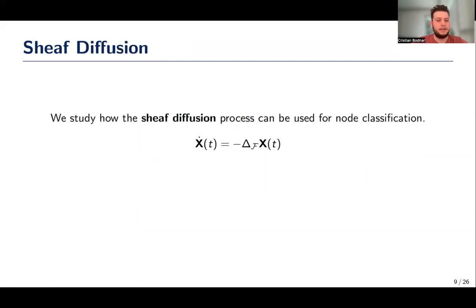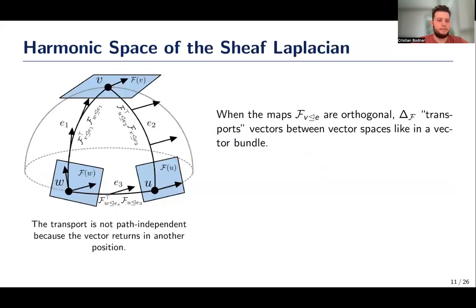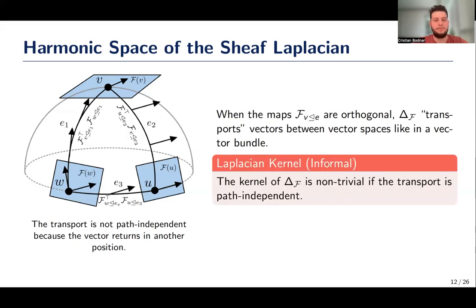Our aim is to study the heat diffusion equation on sheaves, also known as sheaf diffusion. More specifically, we're interested in what sort of sheaves can linearly separate the node classes of the graph in the infinite time limit. Because the sheaf diffusion process behaves like a projection of the initial conditions in the kernel of the Laplacian, we first study when this kernel is non-trivial. We show that when the linear maps are orthogonal, if the transport of the features between any two nodes is independent of the chosen path between them, the kernel is non-trivial.